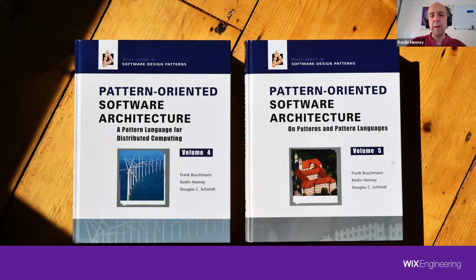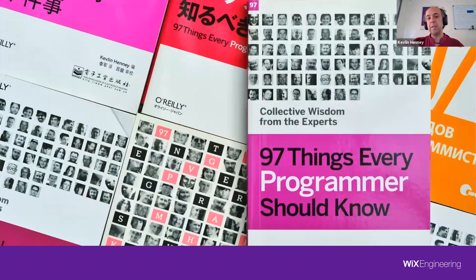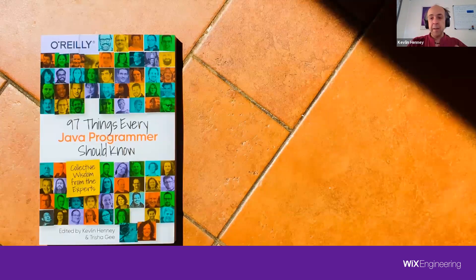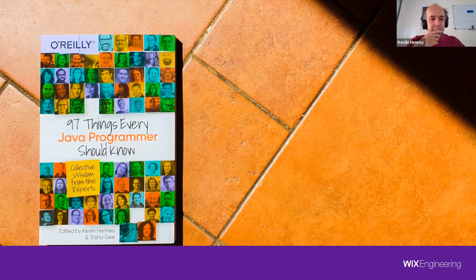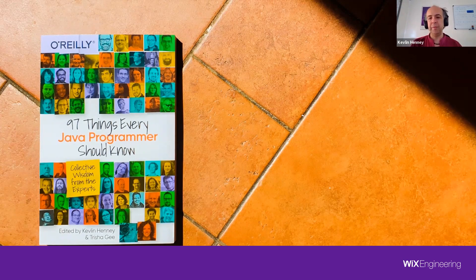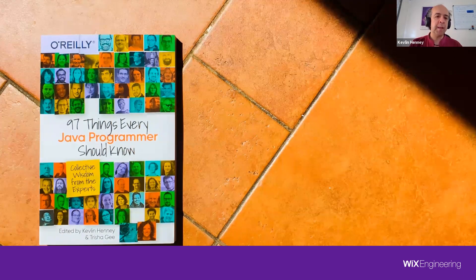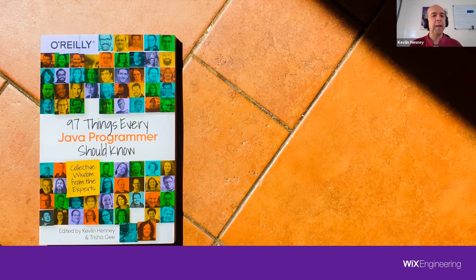I don't think the big picture really is what architecture is about, even in buildings — and definitely not in software. The detail matters. Ten years ago I published with O'Reilly a crowdsourced open source book: '97 Things Every Programmer Should Know'. And this year, thanks to lockdown, myself and Tricia Gee were able to finish '97 Things Every Java Programmer Should Know'. At least half of the advice in that book is applicable whatever programming language you're using.